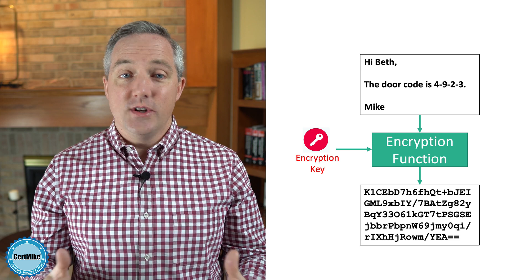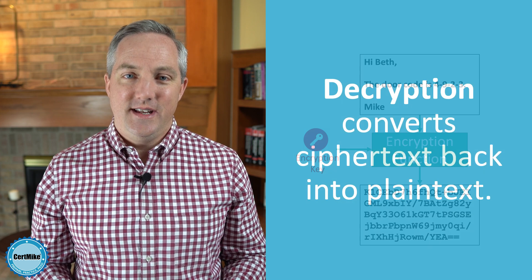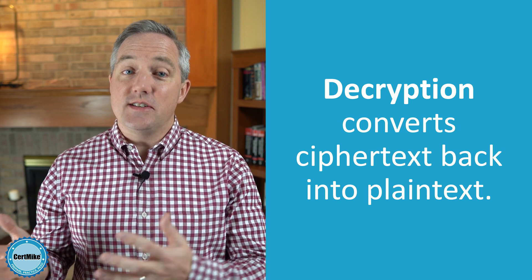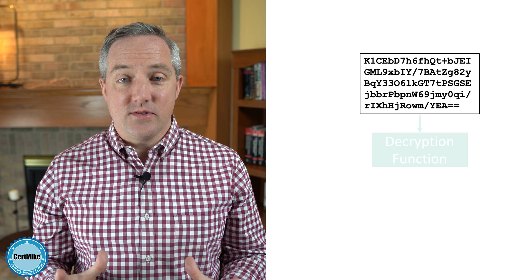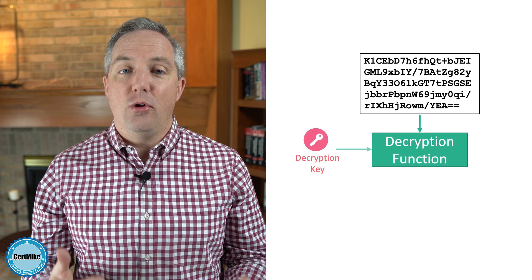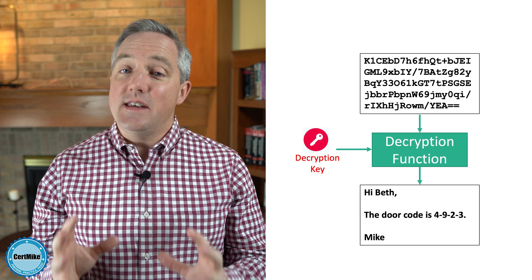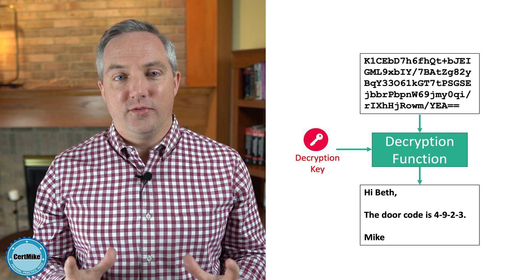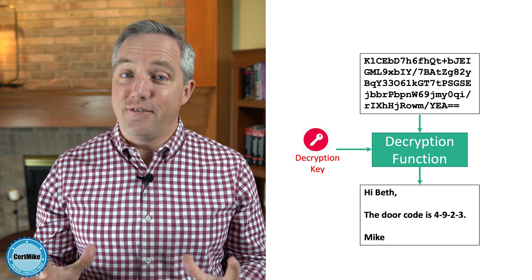When Beth receives the message, she also can't make heads or tails of it, but Beth has the ability to decrypt this message. And that's the second major operation of cryptography. Decryption takes a ciphertext message and uses a decryption key to convert it back into plain text form. She takes the encrypted ciphertext message and feeds it into a decryption function along with the required decryption key. Once she does this, she gains access to the plain text message and now knows the code to enter my building. That process is the basic concept of cryptography — we take plain text data and convert it into an unreadable form so that it is safe from unauthorized access.